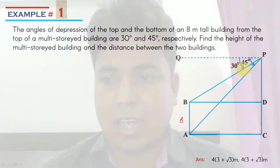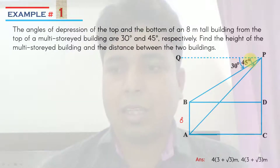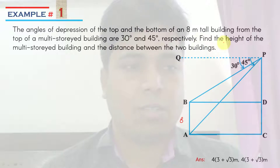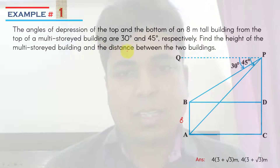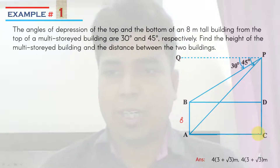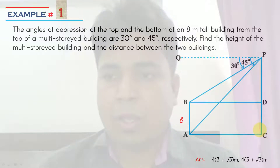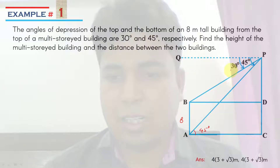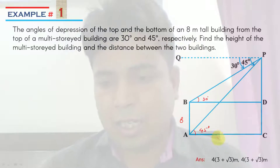As you can see, this is the angle of depression of 30 degrees and this is of 45 degrees. We need to find the total height of the multi-storied building and the distance between them. This angle must be equal to 45 degrees and this angle is 30 degrees, so this angle must also be 30 degrees. Let's say this length is equal to x — that is the distance between the two buildings.